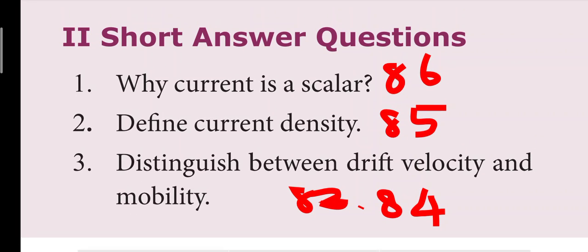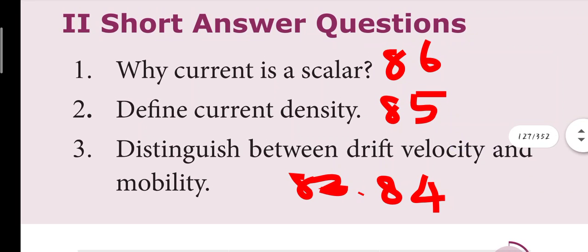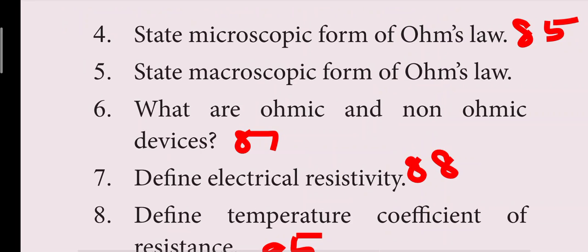The first question is: why is current a scalar? It is on page number 86. The second question: define current electricity, page number 85. The third question: distinguish between drift velocity and mobility, pages 83 and 84. Next question: state the microscopic form of Ohm's law, page 85.